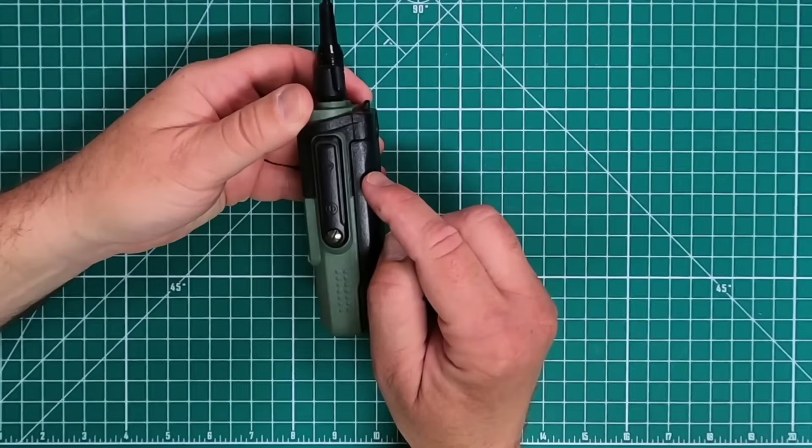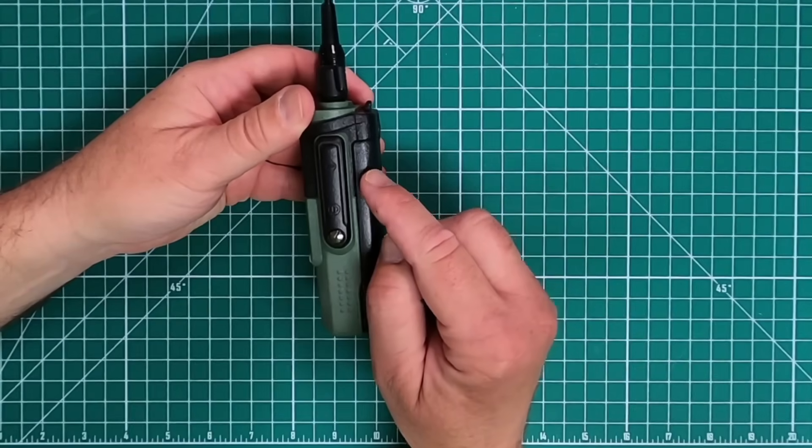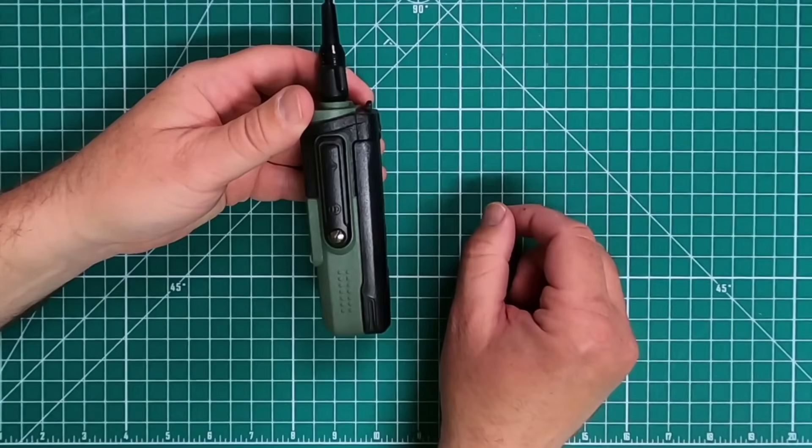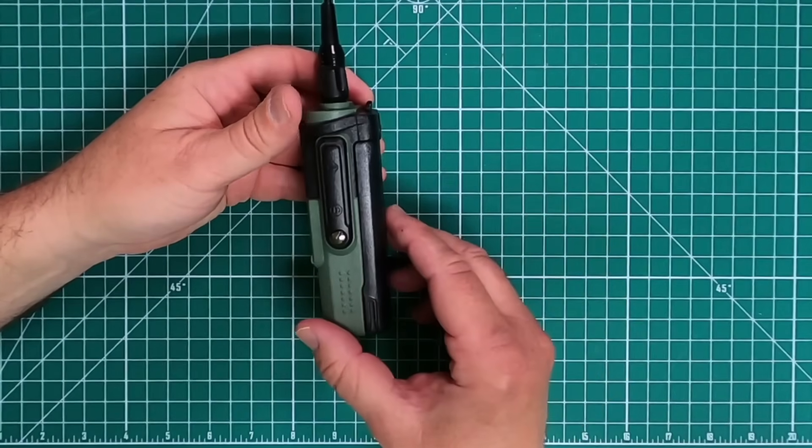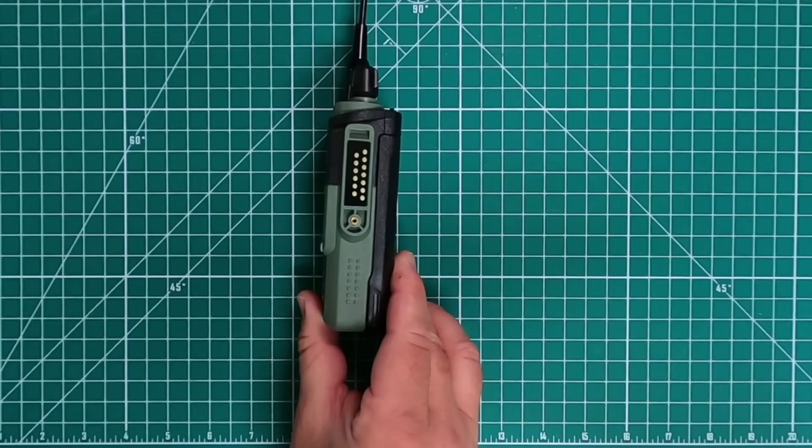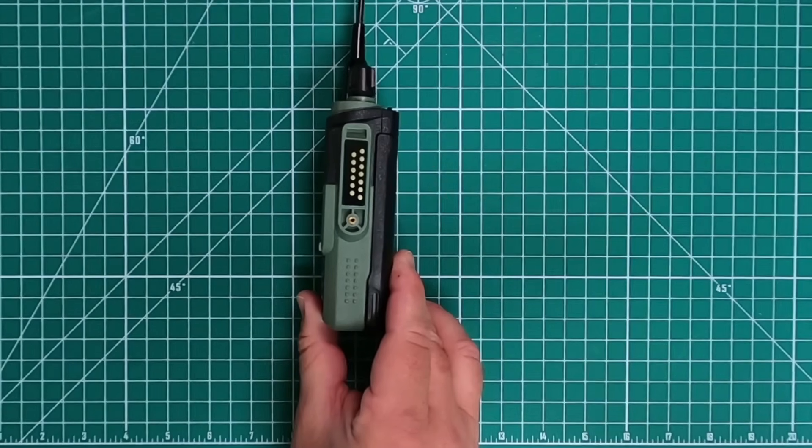This does not use the typical Kenwood style two-prong. You're going to need a different style programming cable and external microphone. I'll show you what that looks like here in a sec. The programming cable and the external microphone are going to need this kind. And I believe this is due to the waterproof nature.